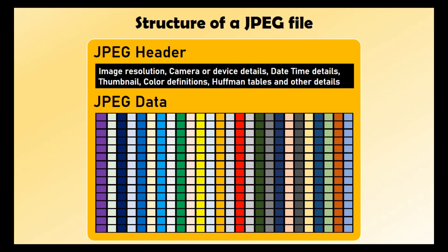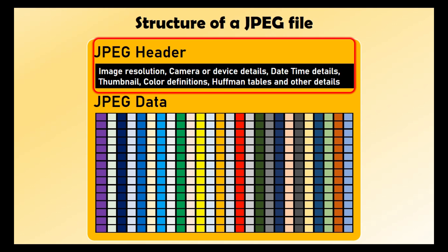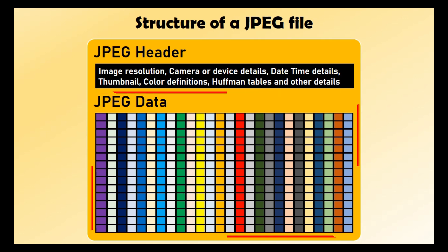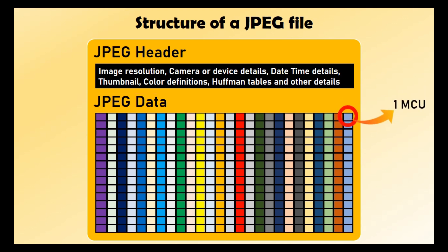For a better success rate, you should first understand the basic structure of JPEG and the root cause of your issue. I'll try my best to keep it simple. At a high level, the JPEG file has two main modules: JPEG header and JPEG data. JPEG header holds information such as image resolution, camera or device info, thumbnail, and other details. JPEG data holds the actual image details, stored in a series of rectangular blocks called MCU, or Minimum Coded Unit.